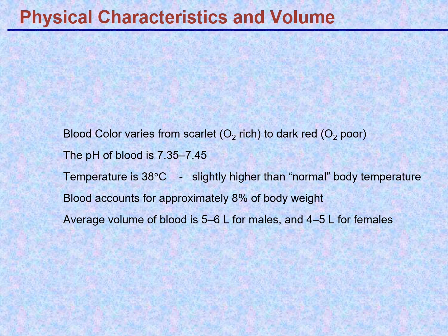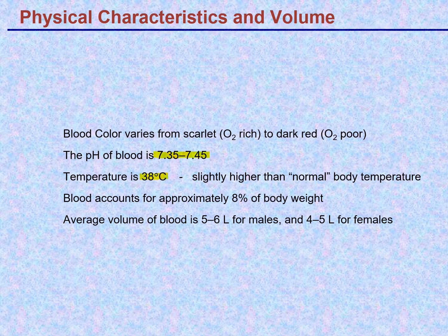Blood pH is typically 7.4 plus or minus 0.05, so 7.35 to 7.45. Body temperature is not the same as blood temperature — blood has a slightly higher temperature. The blood is constantly being pumped through a muscle that's always active; when muscles contract they generate heat, and some of that heat is carried away by the blood as it passes through the heart. So blood temperature is 38 degrees Celsius. Blood accounts for approximately eight percent of total body weight.